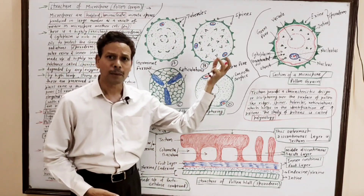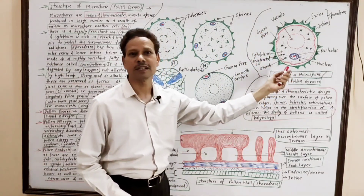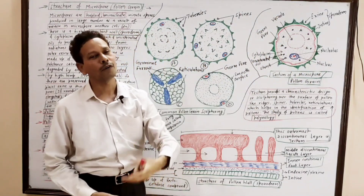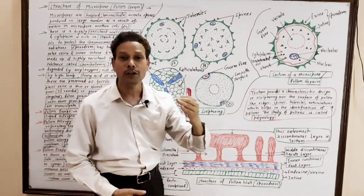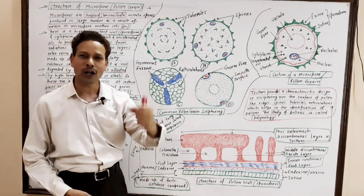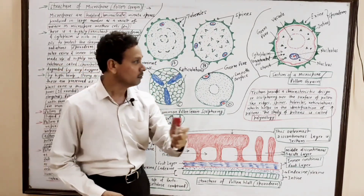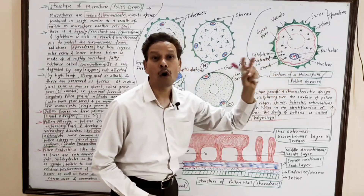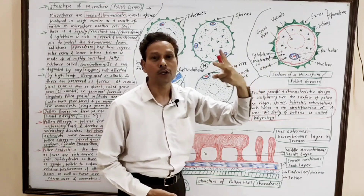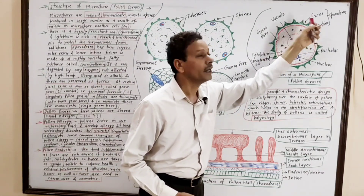The pollens are unicellular structures. At the outer wall of each pollen, microspore or pollen grain, that wall is named the sporoderm. The sporoderm has two layers: the outer layer is the exine, and the inner layer is the intine.